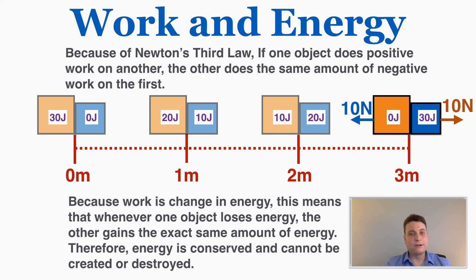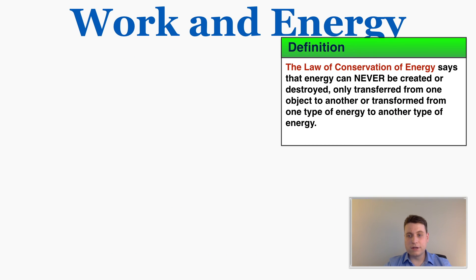The total energy remains the same throughout. Because of Newton's third law, whenever one object gains energy, the other loses the exact same amount — so energy cannot be created or destroyed; it's a conserved quantity. The law of conservation of energy states that energy can never be created or destroyed, only transferred from one object to another or transformed from one type of energy to another.